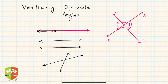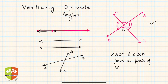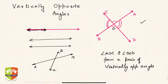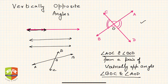If you see here, let's say this is A, B, C, and D. There are two lines AB and CD intersecting at point O. Angle AOC and angle BOD form a pair of vertically opposite angles. Similarly, whenever two lines intersect there will be two pairs — BOC and angle AOD is another pair.